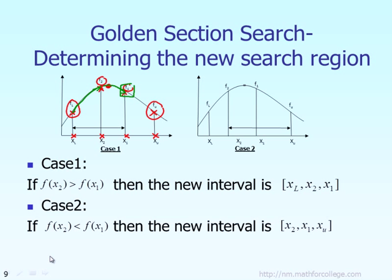Two points before that should be the new lower bound. So for case one, the interval in the beginning is very big, but in the next iteration the interval is shorter — between the new lower bound and the new upper bound. The new lower bound is the same as the old lower bound, but the new upper bound is different from the old upper bound.